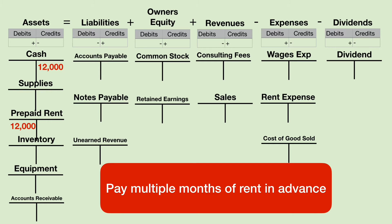The third transaction is similar to the first two. We're buying an asset and we're paying cash. We debit prepaid rent if we're paying for multiple months of rent, and we credit cash because we always credit cash when we pay cash. If we were only paying one month of rent, we would debit the rent expense account. But since we're paying multiple months, that will benefit our future, and we put it as an asset. Then in the next chapter, I will show you how to transfer the prepaid rent over to rent expense at the end of the year.